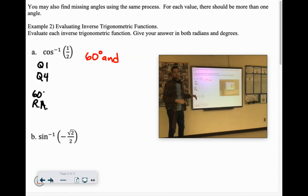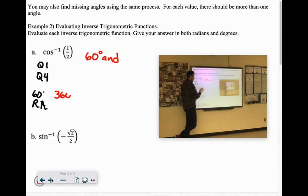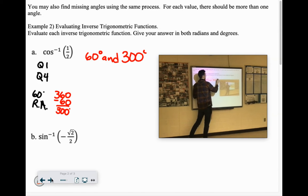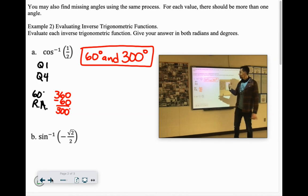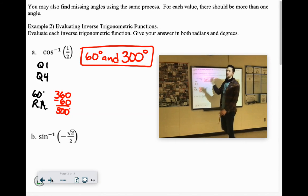If we have a 60-degree reference angle in the fourth quadrant, we would have to do 360 minus 60, which would give us a 300-degree angle. I want you to start thinking with these fractions instead of having to convert it every time. It's always out of 180, right? So 60 out of 180, if you simplified that fraction, that would be 1 third. So 60 degrees would be pi over 3.